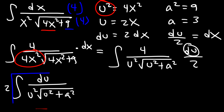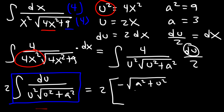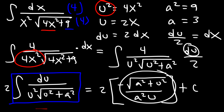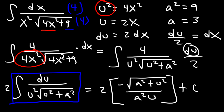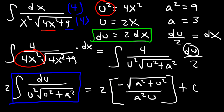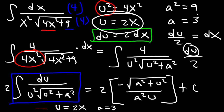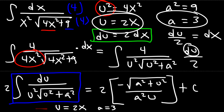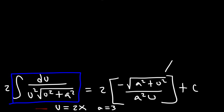Now we can apply the formula for this integral. It's negative square root of a squared plus u squared, divided by a squared times u, plus c. If we had applied this formula without converting first, we would have forgotten the important factor of 2, which would change our entire answer. So when du doesn't equal dx, you must convert the expression first, then apply the formula. Note that u equals 2x and a equals 3.